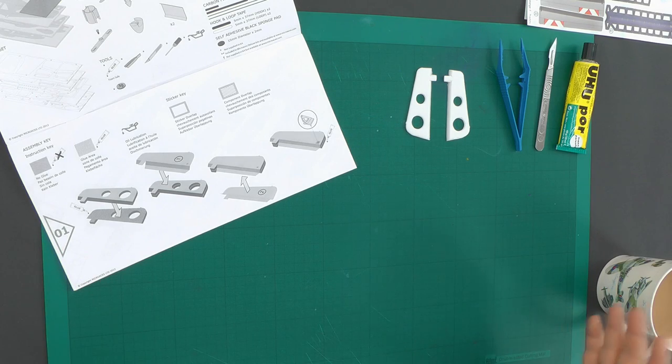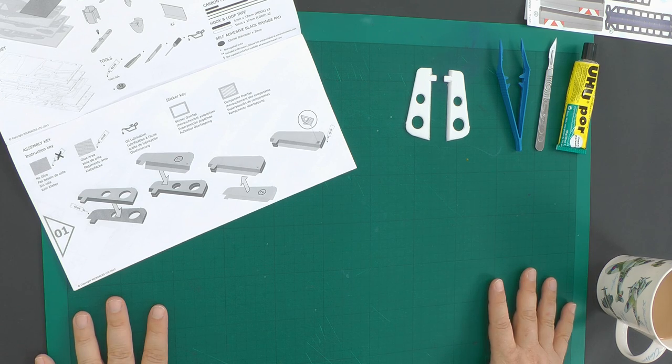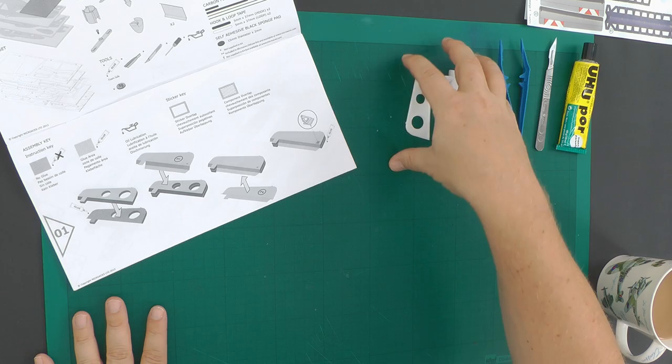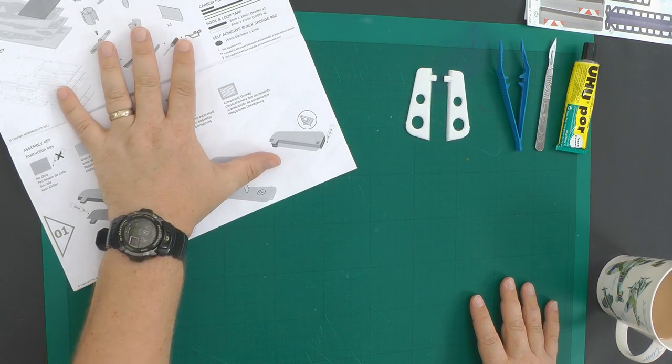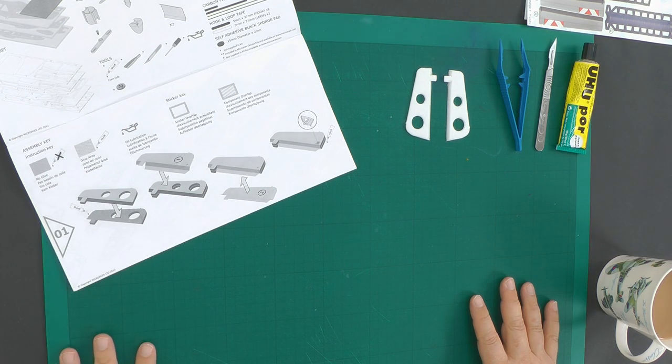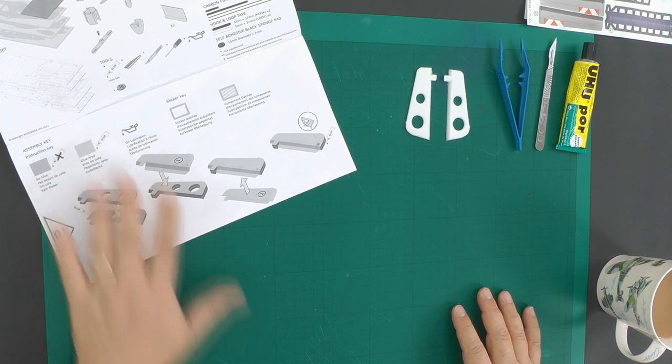Here we are, the start of the build. Very exciting. I have the tools for the job, the glue, I have the parts for the first step and I have the manual. Don't forget, always use the manual for a Micro Oasis build. Let's go to the manual and look at step one.